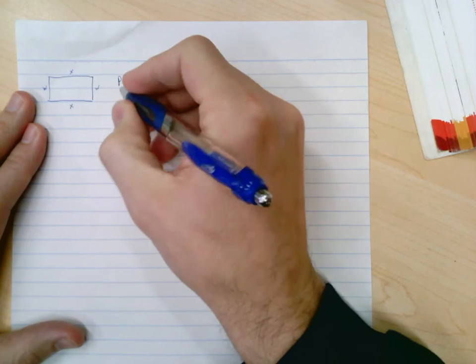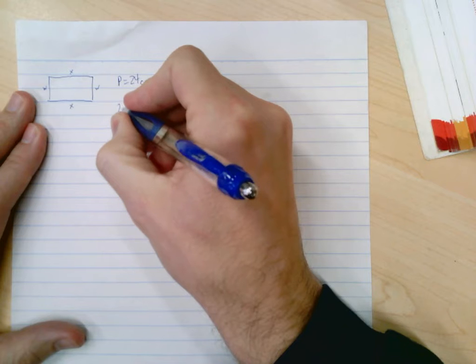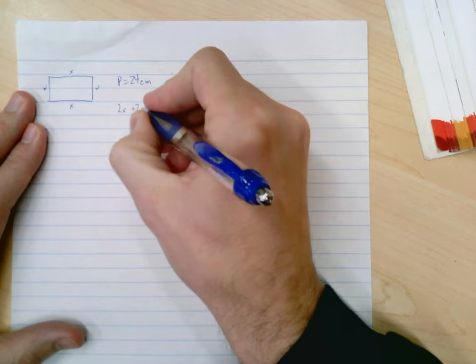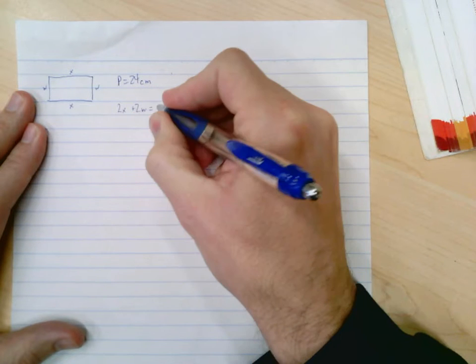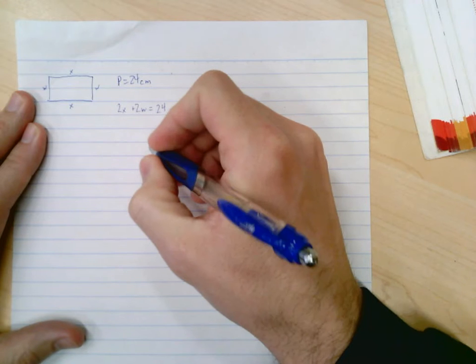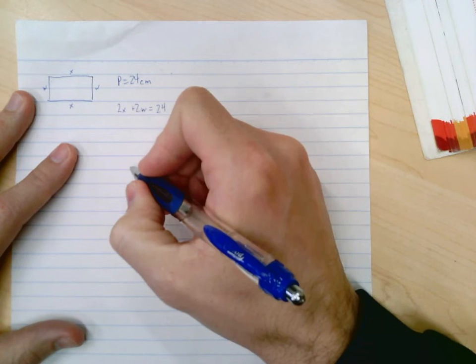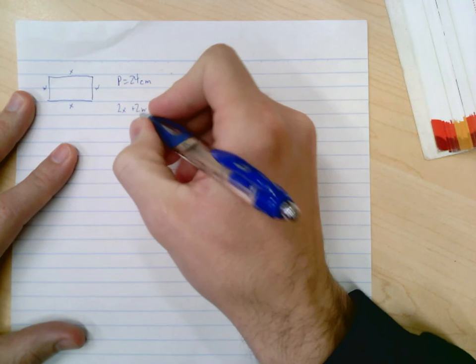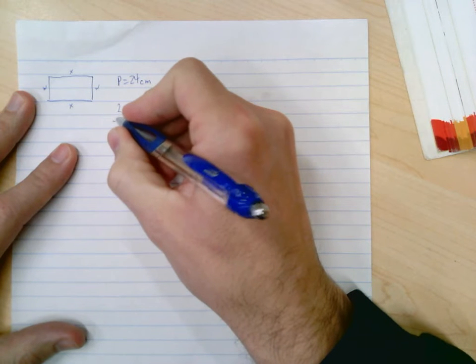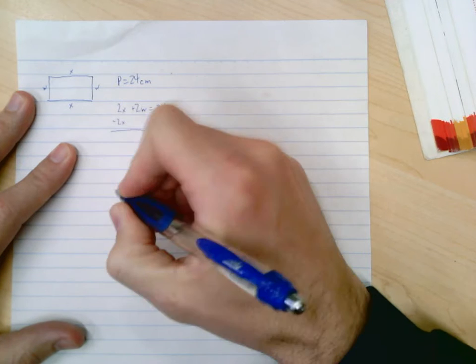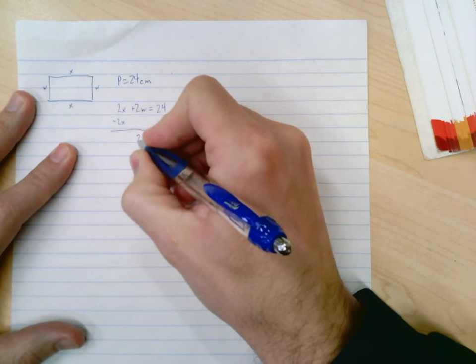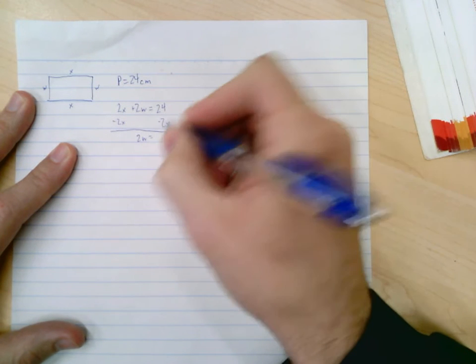So if I add up all the sides, it'll be x plus w plus x plus w, or in other words 2x plus 2w. Now that perimeter, as stated before, is 24. So the first question asked me to find the length, so in order to find the length I'm going to solve for w. So we'll go ahead and subtract the 2x.